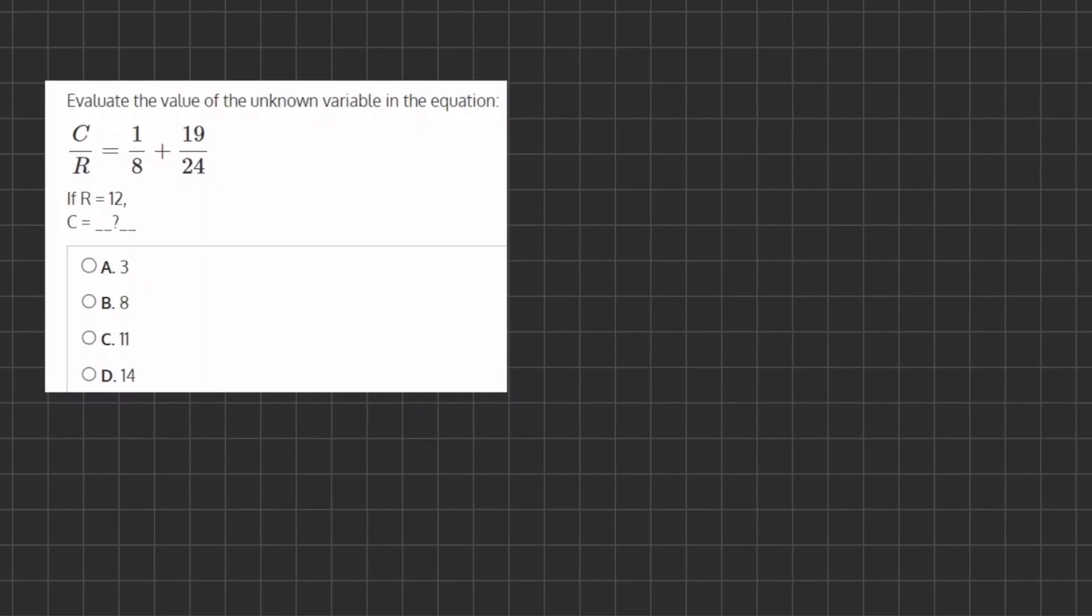All right, so in this problem we want to find the value of the variable c and we are given the value of the variable r. So let's plug in the 12 for r and isolate c in order to solve.